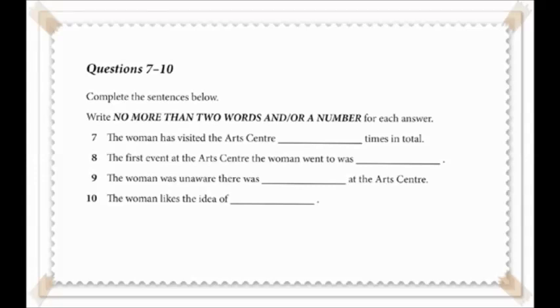Before you hear the rest of the conversation, you have some time to look at questions 7 to 10. Now listen and answer questions 7 to 10. While you're here, we're actually conducting a short survey of people who phone up the Arts Centre. Would you mind if I asked you a few questions? It'll only take a couple of minutes. Sure, no problem. Thanks a lot.